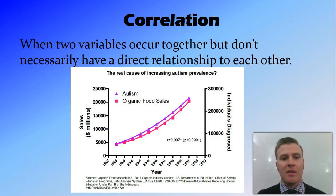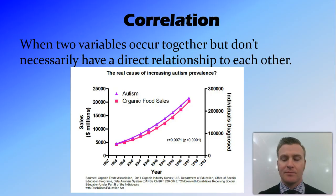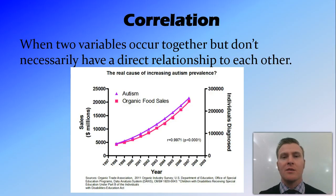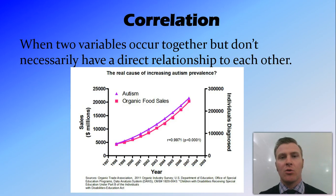You can see here that there is a correlation between autism numbers and organic food sales over the last 20 years. This does not necessarily mean that autism is causing people to buy organic food, or that buying organic food is causing autism. This is just something that happens to be occurring at the same time — so there's a correlation between these two values.